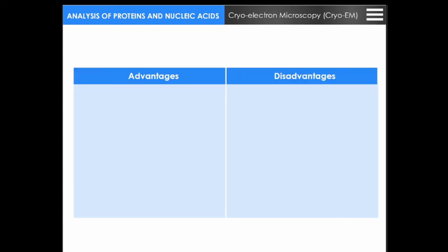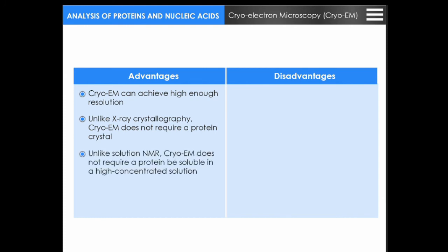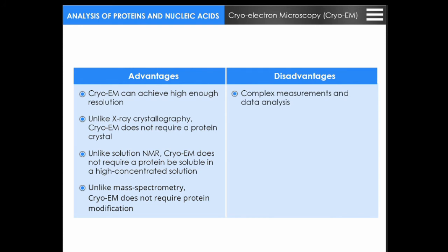Here we have a table illustrating the advantages and disadvantages of cryo-electron microscopy. Advantages: cryo-EM can achieve high enough resolution; unlike X-ray crystallography, it does not require a protein crystal; unlike solution NMR, it does not require the protein to be soluble in a highly concentrated solution; and unlike mass spectrometry, it does not require protein modification. Disadvantages: complex measurements and data analysis, and it is difficult to use for proteins with molecular weight below 300 kilodaltons.